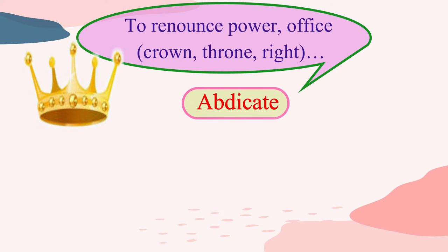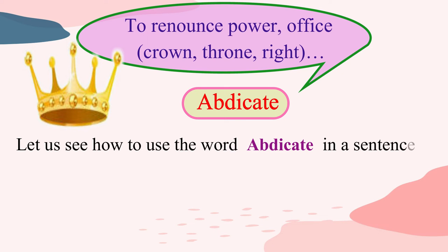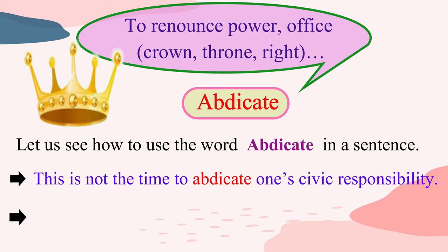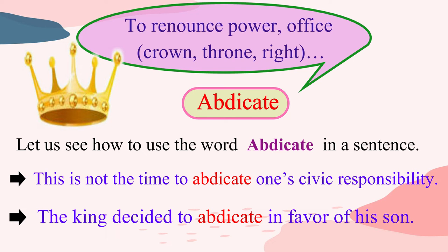Abdicate is a word reserved for a king or queen or any other person who is in a powerful position. Now, let us see how to use the word abdicate in a sentence. This is not the time to abdicate one's civic responsibility. The king decided to abdicate in favour of his son.